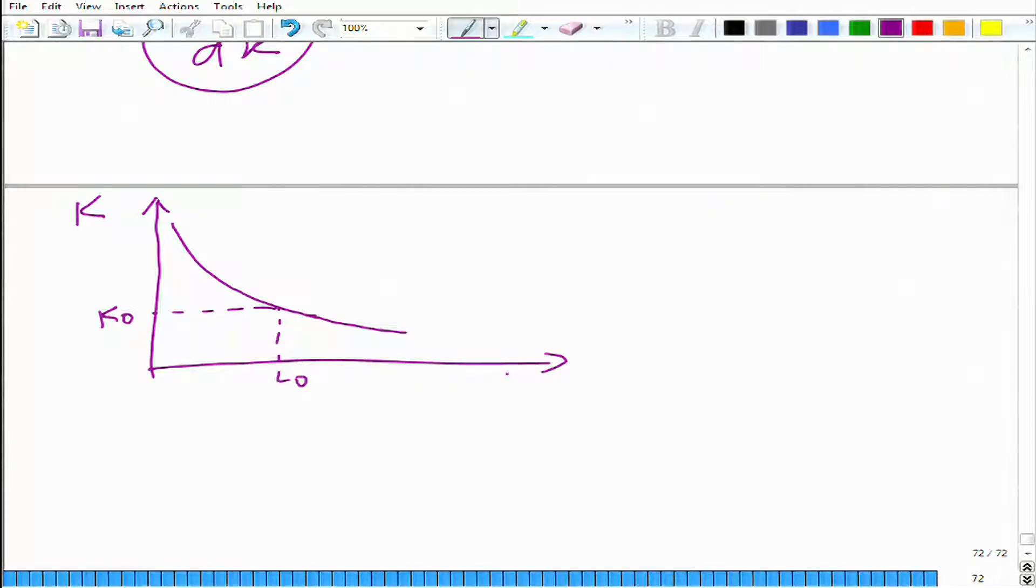Now, if we double the amount of labor and double the amount of capital, we will have another isoquant passing through this point.